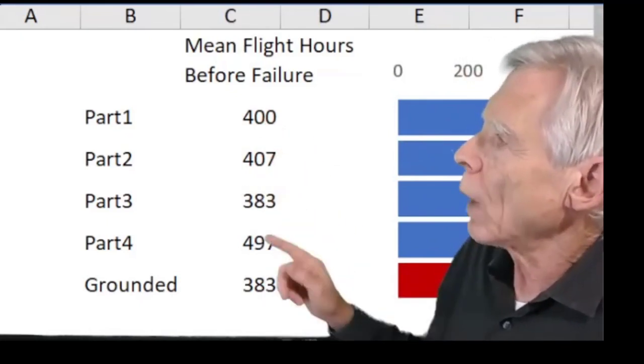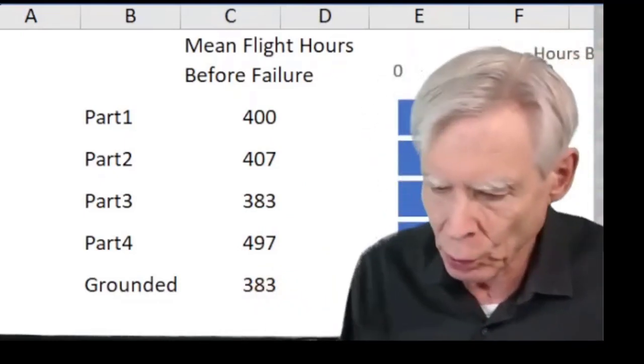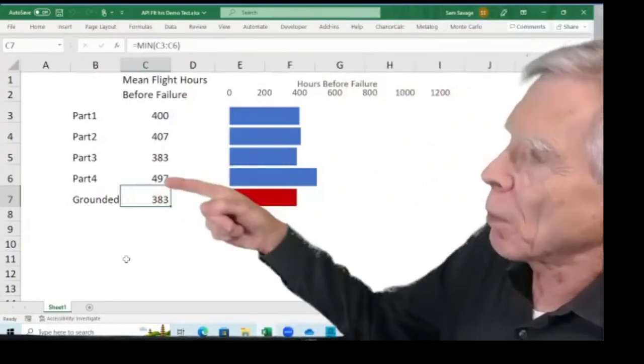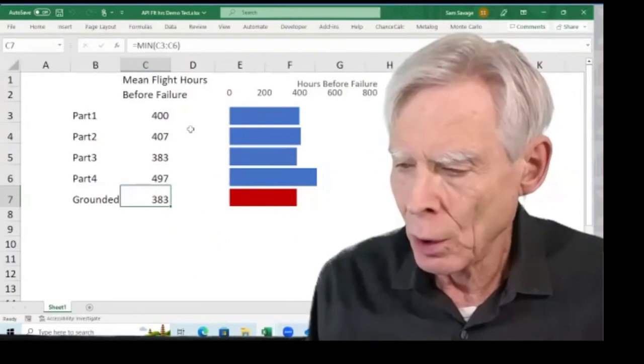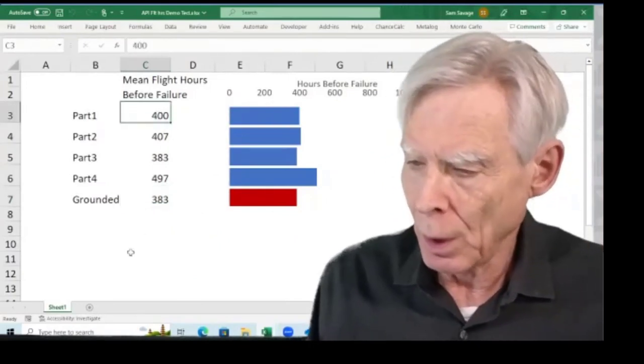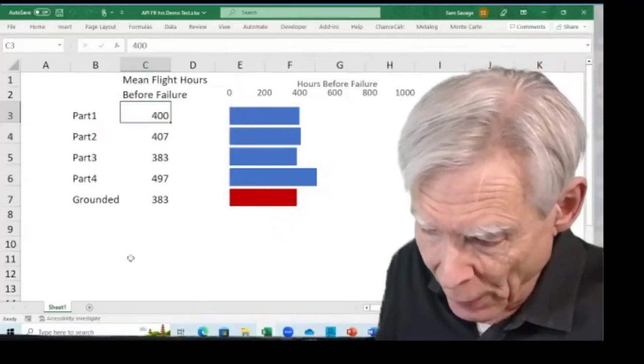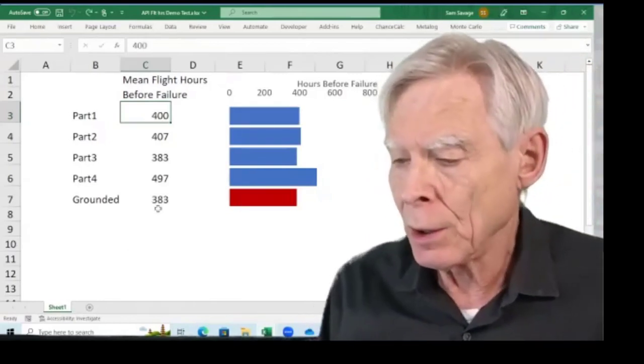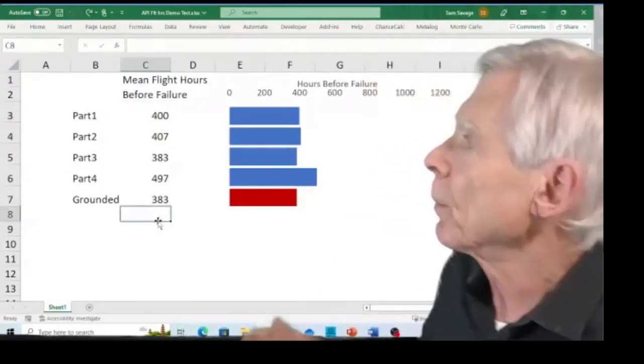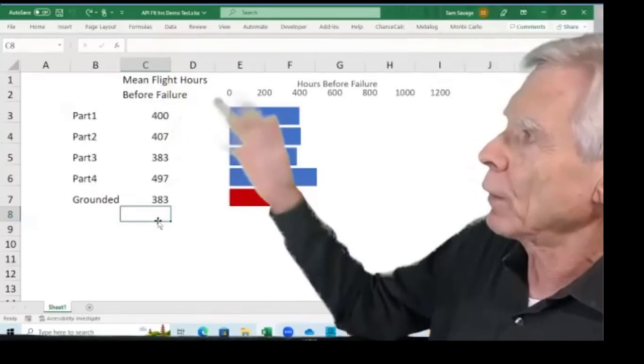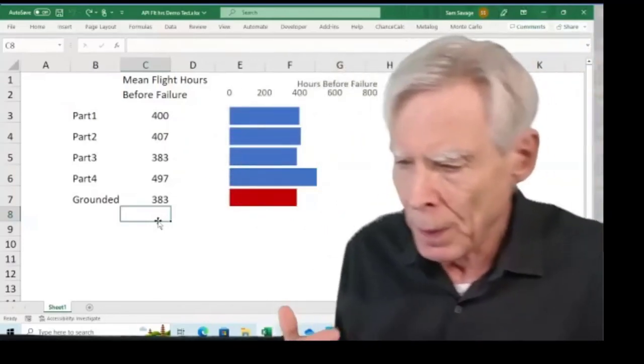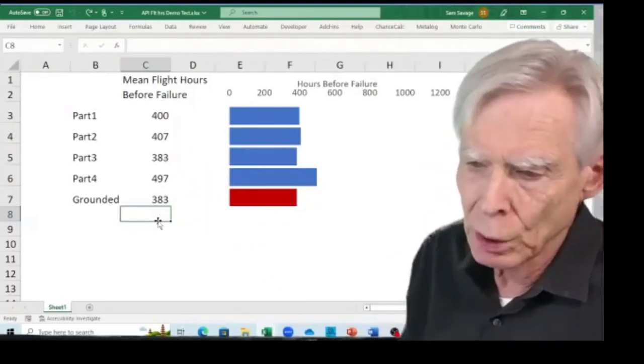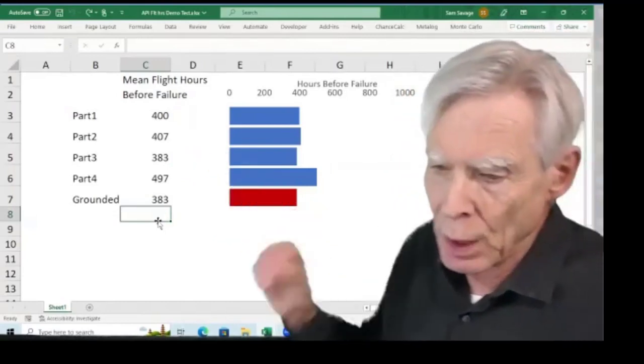So here we have four parts, and sure they don't fail on a regular basis, they fail randomly. So what we record is on average how many hours do they fly before they fail. Now if any of these parts fails, then the plane is grounded. So the important thing to see here is that the plane is grounded at the minimum of any of these numbers. Like, let's suppose instead of 400 hours, that one failed at 40 hours. Well then the plane fails at 40 hours.